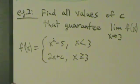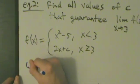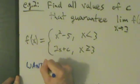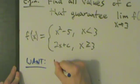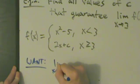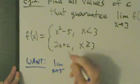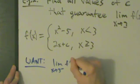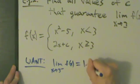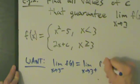So let's go ahead and write that down. What we want is this: We want the limit as x approaches 3 from the left of f of x to be equal to the limit as x approaches 3 from the right of f of x.